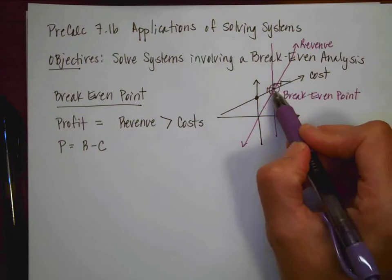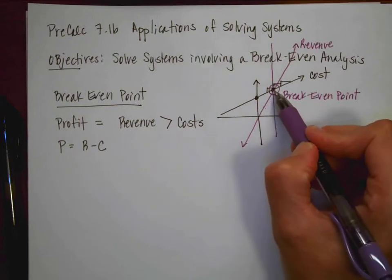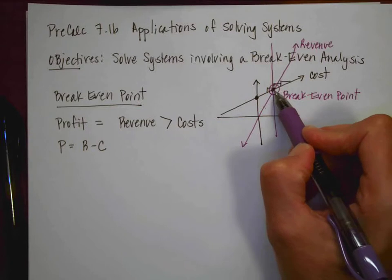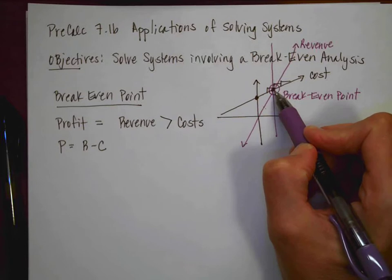So oftentimes we want to find this point. It's called the break-even point. Oftentimes it's used to figure out how many items I need to sell so that I can realize a profit.